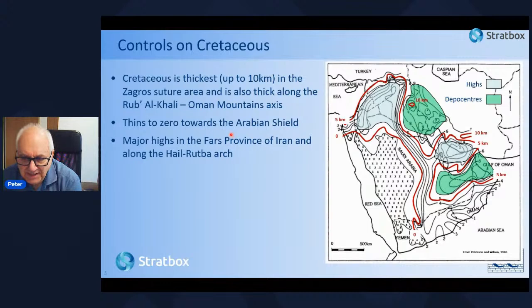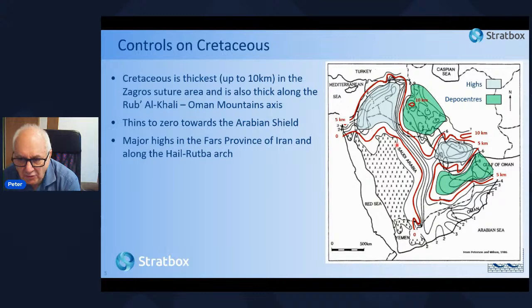Looking at the general isopac of the Cretaceous, it is thickest — up to 10 kilometers — in the Zagros suture and also thick along the Rub' al Khali-Oman mountain axis, thinning to zero by onlap towards the Arabian Shield. There are major depositional highs in the Fars province of Iran and along the Heil-Rutba arch in the north of the plate.